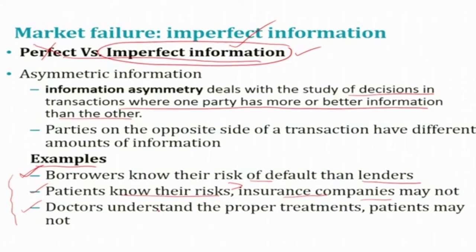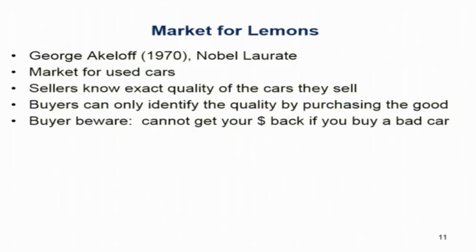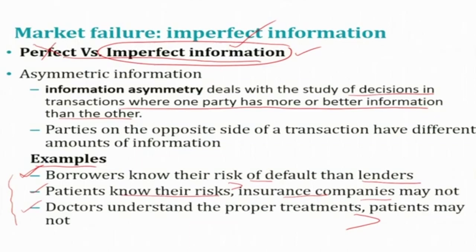Financial markets are heavily filled with asymmetric information issues that affect their efficient working. Because of asymmetric information, there will be market failure — the market won't work efficiently. Demand and supply, price determination, and market clearing won't happen smoothly because of information asymmetry.